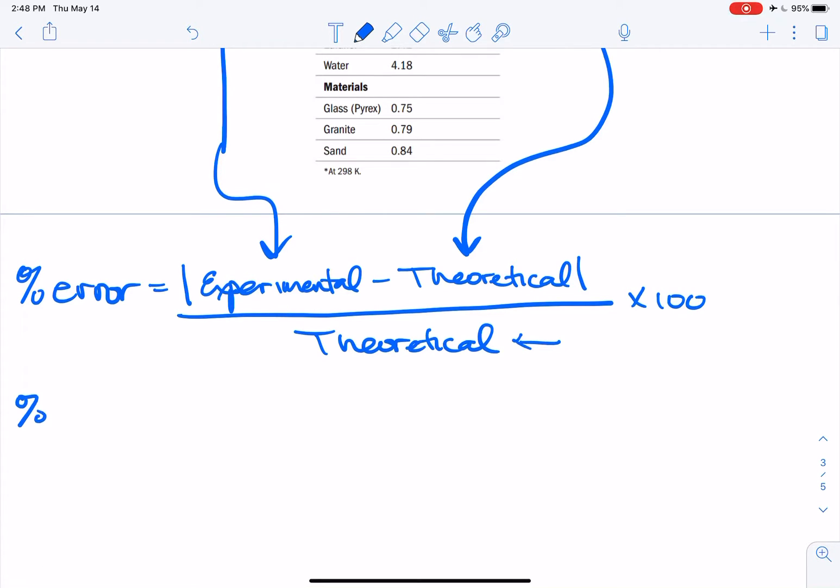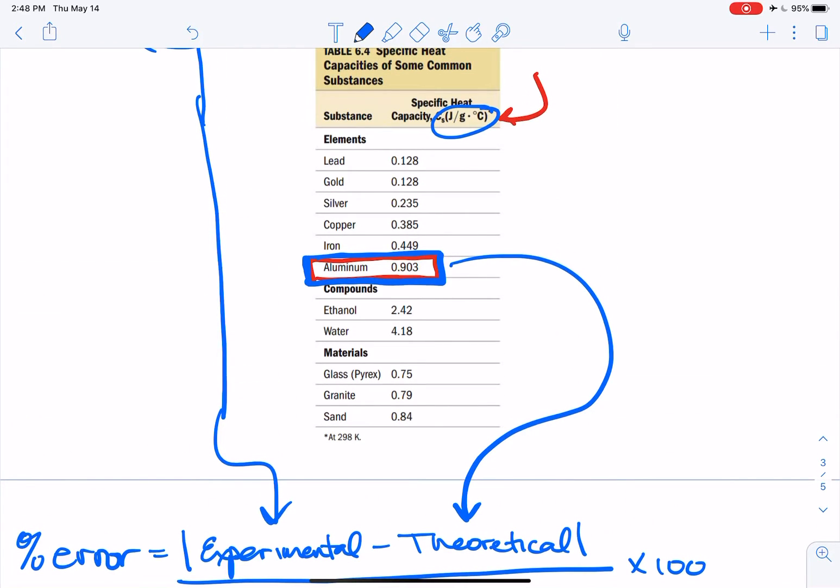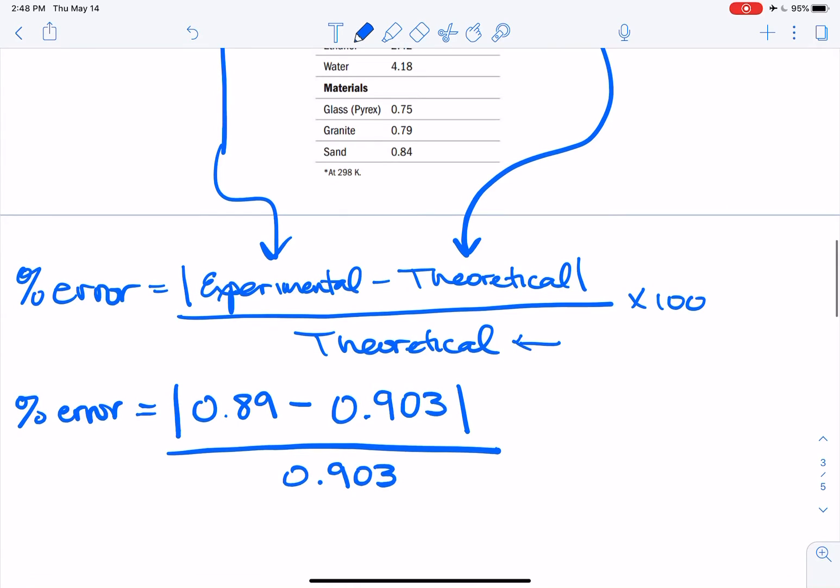So our percent error would be the absolute value of 0.89 minus 0.903, and we will divide this all by 0.903. And you guys can add the units in there, the joules divided by grams times degrees celsius for each of your values, but they're gonna cancel out so don't worry too much. So I didn't write those there.